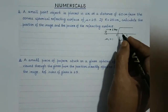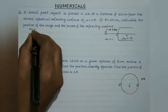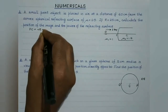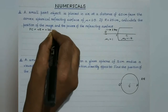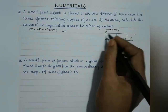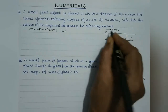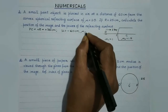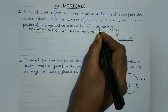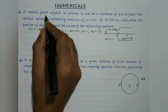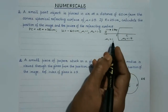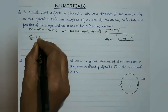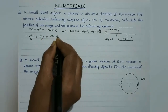Here in this case, PC is measured along the same direction as that of the incident ray, so it is to be taken as plus R, equal to plus 25 cm. Now, object distance u — PO is the object distance — it is measured in a direction opposite to that of the incident ray, so as per the sign convention it has to be taken as negative. So it is minus 60 cm. mu1 is 1 and mu2 is 1.5.